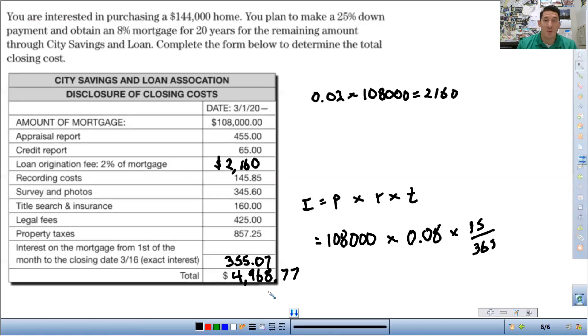And so you might be wondering who covers the closing costs. This is something that can be negotiated. Typically, it is the buyer that covers the closing costs. But it can be negotiated that the seller covers a portion of it or all of it. But usually, it is the buyer that covers the majority, if not all, of the closing costs.